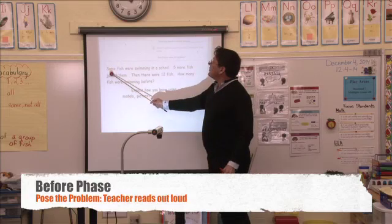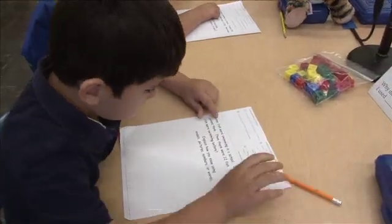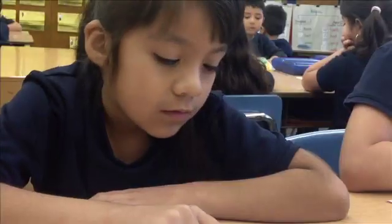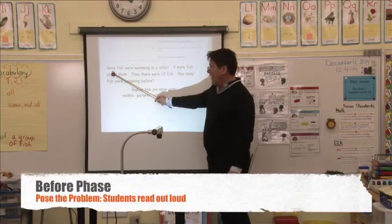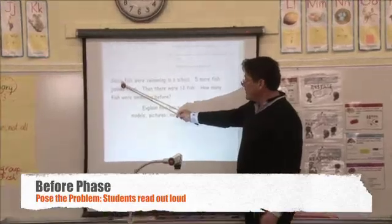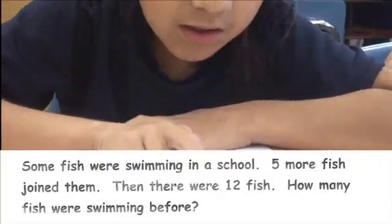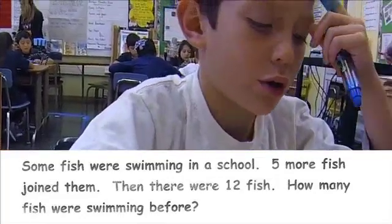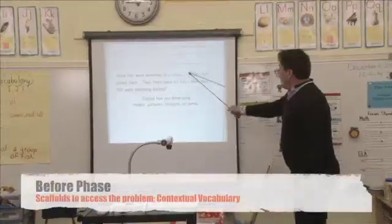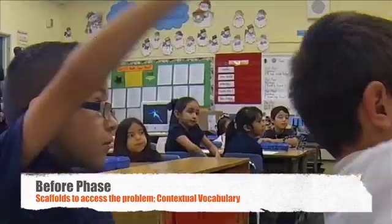Let's read it together. In the before phase of the lesson, I make sure students understand what the problem is asking. We clarify any unfamiliar vocabulary and identify what information is given in the problem to help the students solve it. I do this by having the class read the problem aloud and by building in think-pair-share. Some fish were swimming in a school. Five more fish joined them. Then there were twelve fish. How many fish were swimming before? Five more fish joined them — what do they mean by joined? What does that word mean?